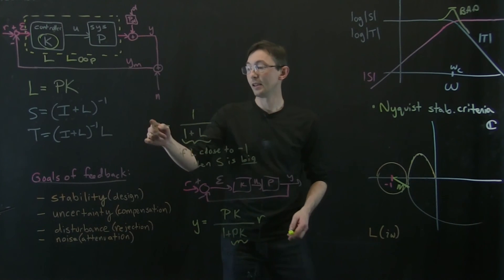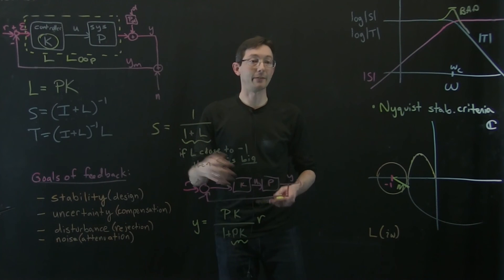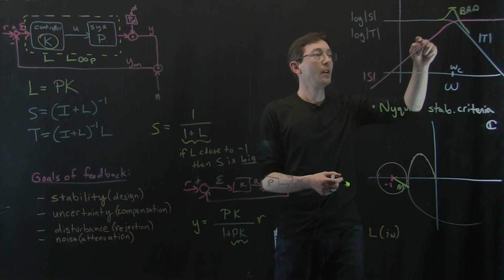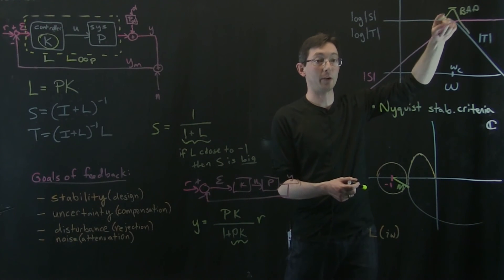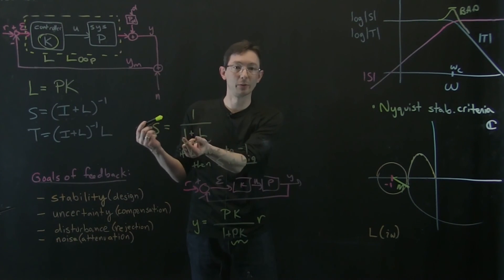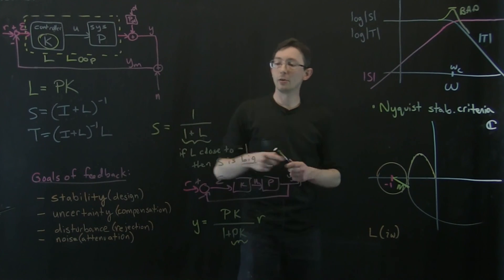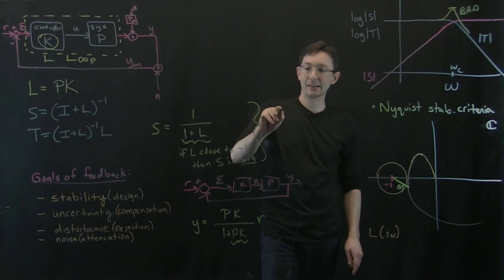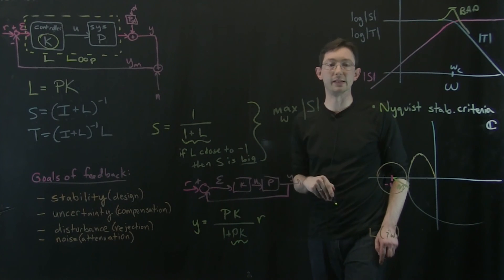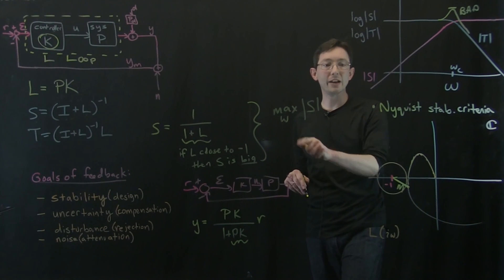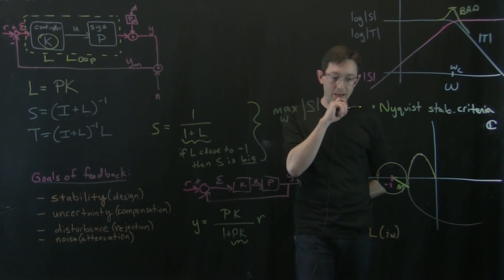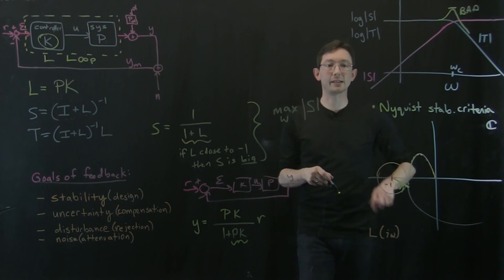So if I have a really non-robust system, if I'm right up against this negative one point, then my S function is going to have some frequency where it gets really, really big, because S is going to be one over epsilon, something really small, L is going to be close to negative one. So essentially what we have is that the max of S, the max of the absolute value of S over all frequencies, is essentially a measure of how far we are from this point here. And so there's a precise way of formulating this. I'll do that in the next little segment.